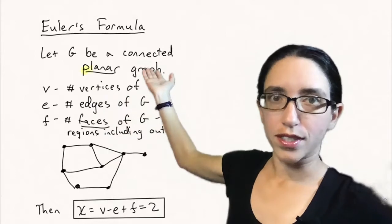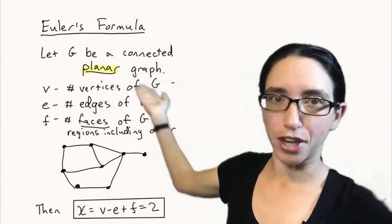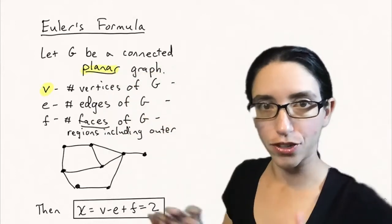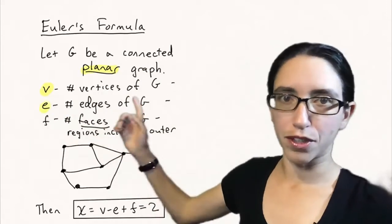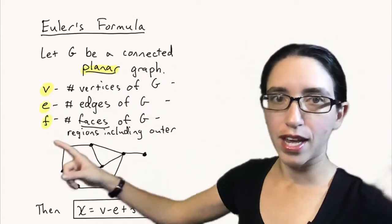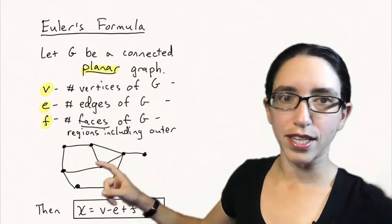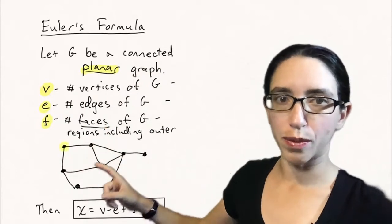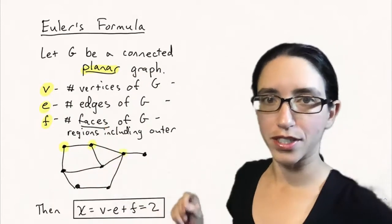Let G be a connected planar graph, so it can be embedded in the plane with no edges crossing. V is the number of vertices of G, E is the number of edges, and F is the number of faces. These are the regions enclosed by the edges, including the outer region.